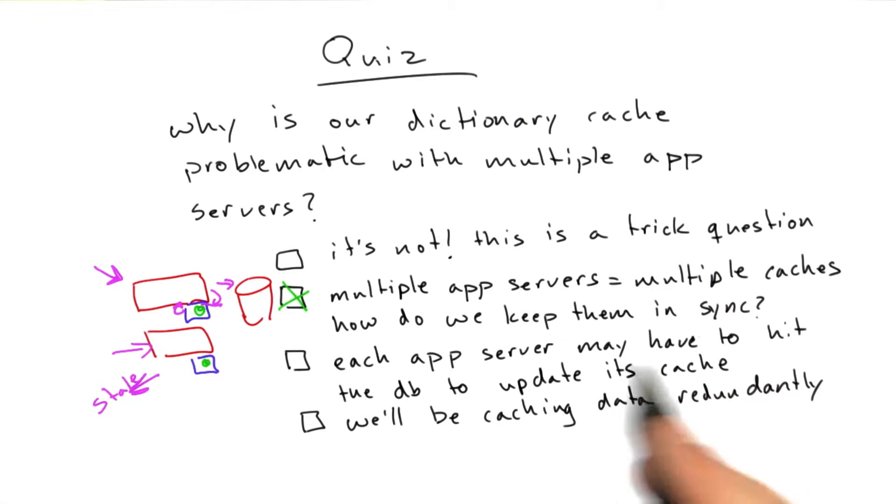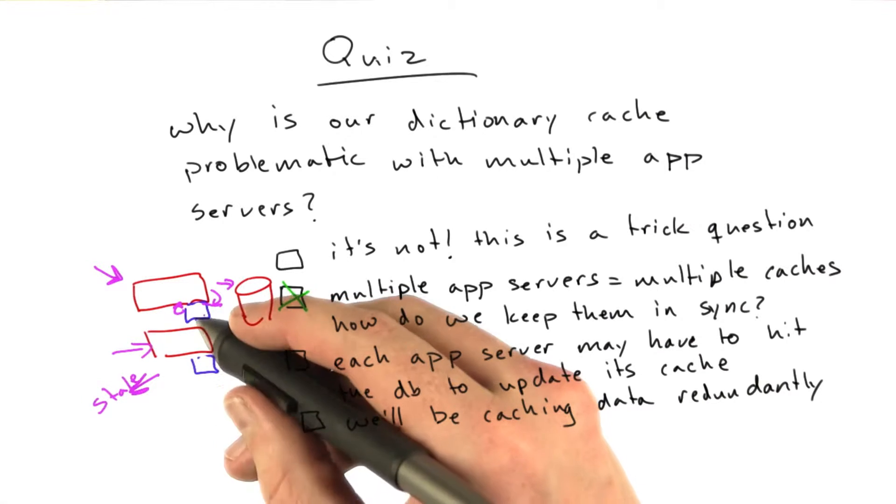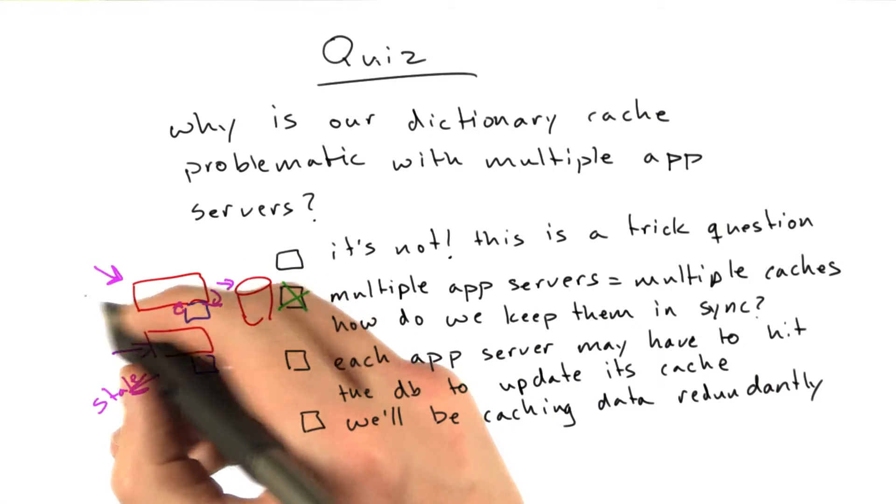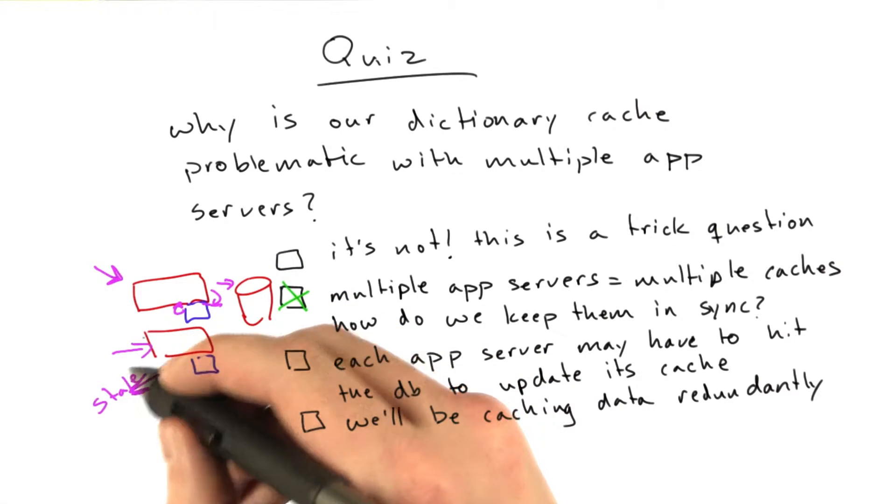Each app server may have to hit the database to update its cache. This is a problem. Let's say both of these caches are cold. They're empty. And two read requests come in, or many read requests come in.